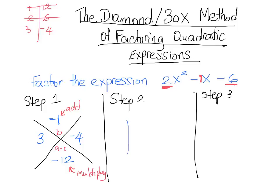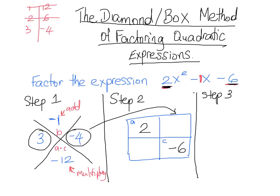Step 2 is our box. Our box is divided into four parts. At the top left side of our box we're going to put our A value. Bottom right we're going to put our C value. So in our box the 2 will go at the top left and C negative 6 will go at the bottom. The values we obtained at the side of our diamond will go into the other spaces and it doesn't matter which one goes where. I could put 3 here and negative 4 here or vice versa.